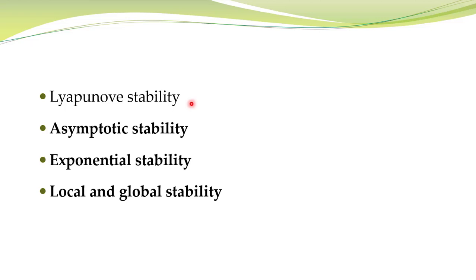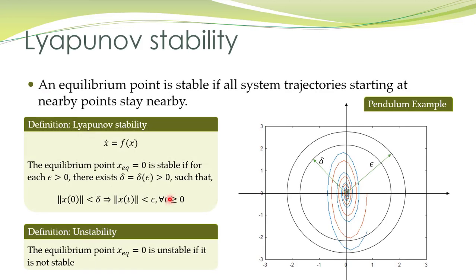In the last lecture we talked about Lyapunov stability. In today's lecture we shall discuss a few more associated definitions: asymptotic stability, exponential stability, local and global stability. Here is the definition of Lyapunov stability: an equilibrium point of a nonlinear system is stable if corresponding to each value of epsilon there exists some nonzero value of Delta such that trajectories starting within a ball of radius Delta stay within a ball of radius epsilon, for all initial conditions and for all values of epsilon.